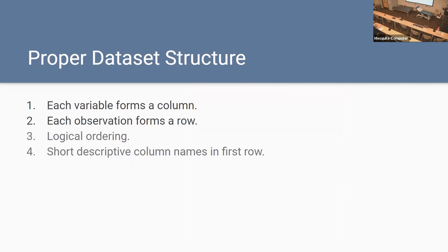Here are the principles outlined in Wickham's paper that make up a tidy data set. Number one: each variable forms a column. Number two: each observation forms a row. Numbers three and four are a bit optional but helpful — logical ordering, where the first variable is ordered and followed by the second and so on, and short descriptive column names with no spaces. Those are always helpful as well.